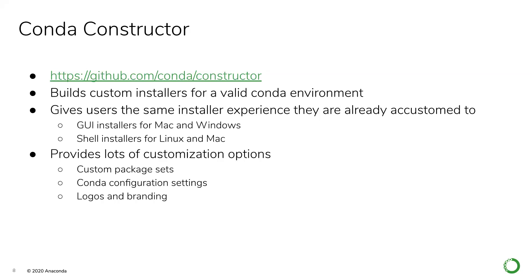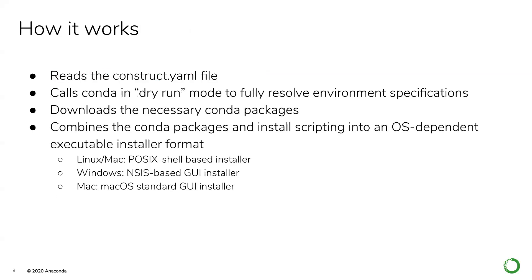You can even supply your own logos and branding for your installers. The way it works is it reads a file called construct.yaml, which includes the specification for the environment you want to create. Then it calls Conda in a dry-run mode — it doesn't actually create a copy of the environment, but it does fully resolve the specification, getting exact versions and builds of every package needed and all the dependencies. It downloads any packages it doesn't already have, and then combines them into an OS-dependent executable installer format.